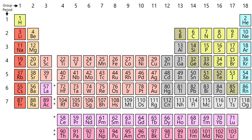Consequently, elements in the same group tend to have a shared chemistry and exhibit a clear trend in properties with increasing atomic number. In some parts of the periodic table, such as the D block and the F block, horizontal similarities can be as important as, or more pronounced than, vertical similarities. Under an international naming convention, the groups are numbered numerically from 1 to 18, from the leftmost column to the rightmost column. Previously, they were known by Roman numerals.